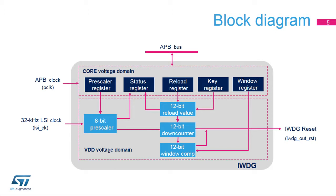Two clocks are needed. The APB clock is required in order to access registers. The LSI clock is required for the functional part of the watchdog. This architecture allows the Independent Watchdog to work even in stop and standby modes.